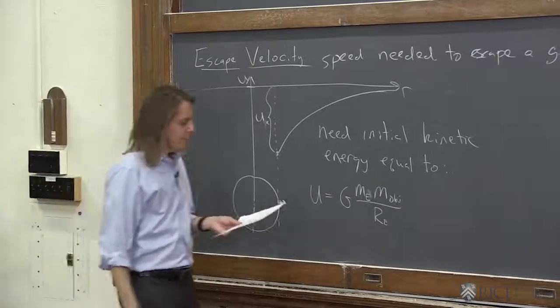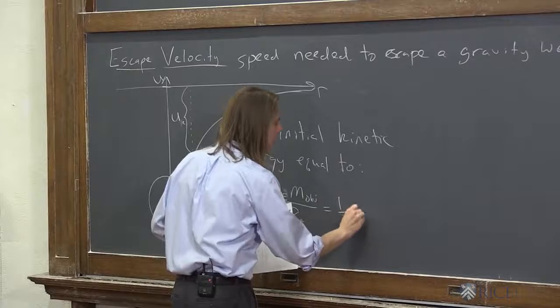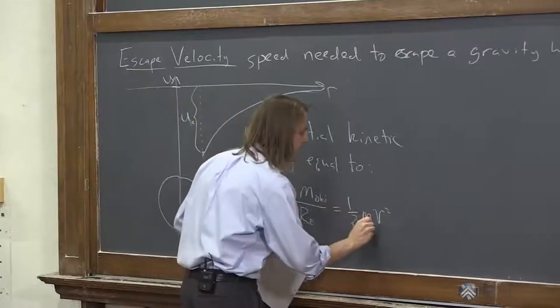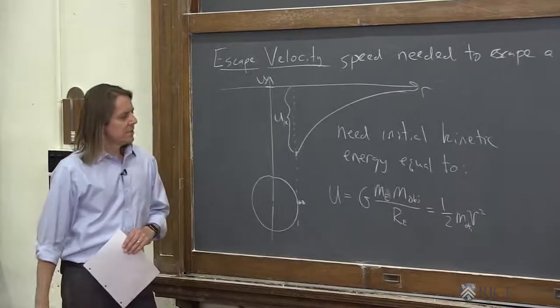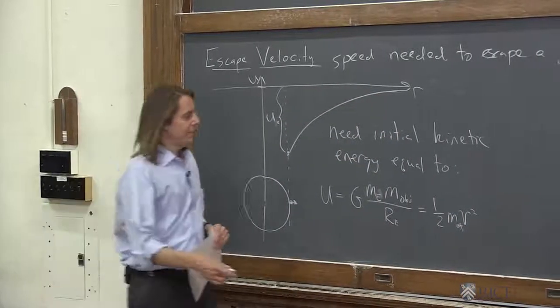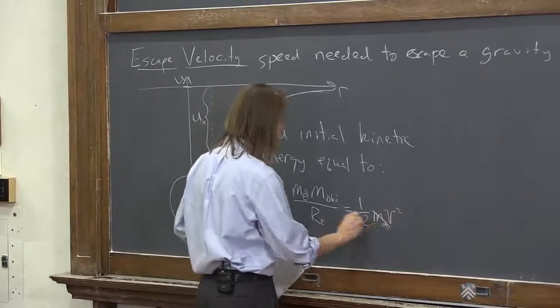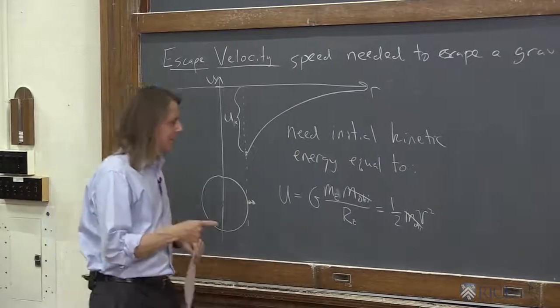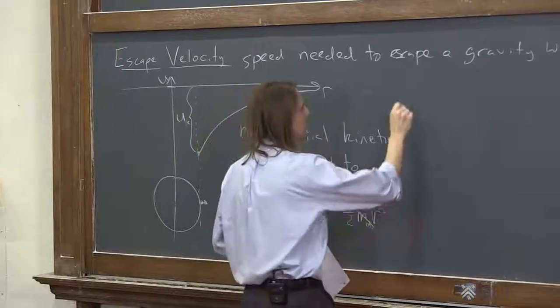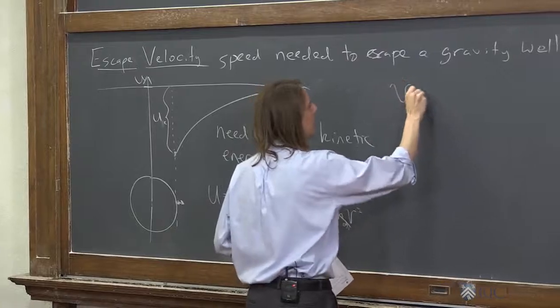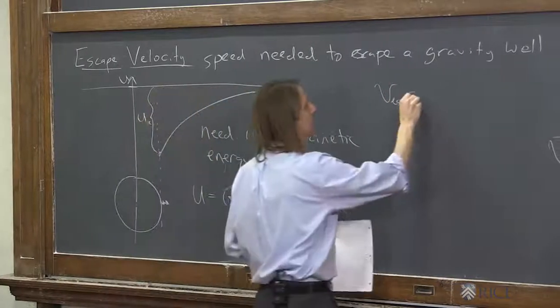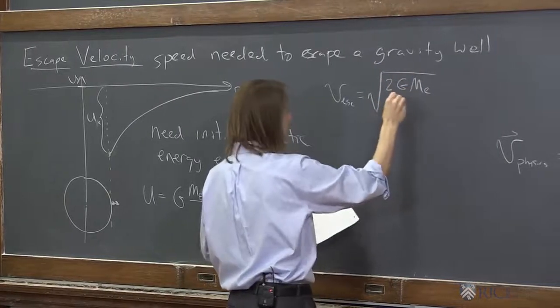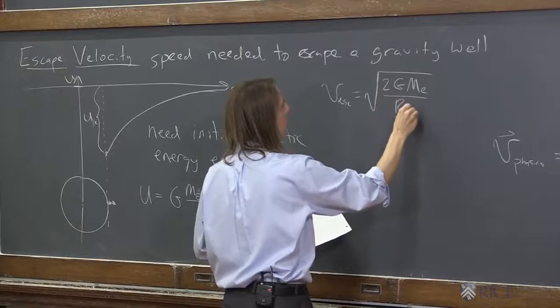So we say that's equal to one-half mv squared. Where, again, this is the mass of the object. So we see that, and you just solve for v. That's how fast you initially have to be going to make it out. Cancel mass of the object, and two, and you take a square root, and you get that your escape velocity is, we get a two, yeah, it's all in the square root of two. Two big G, mass of the Earth over the radius of the Earth.